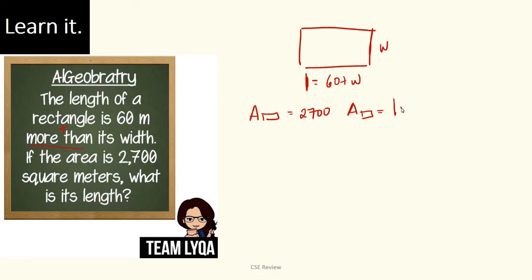How can we solve for the length? All we have to do right now is to substitute this and form an equation. The area of a rectangle is length times the width. Ibig sabihin, this 2,700 was obtained by multiplying the length, which is 60 plus W, with W.